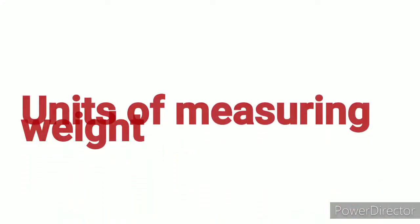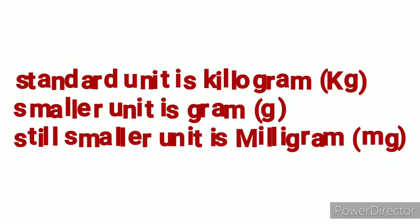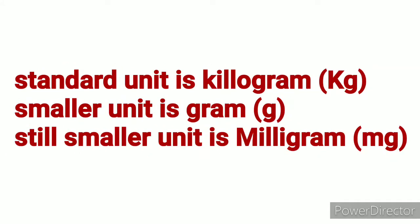Let's understand the units of measuring weight. The standard unit of weight is kilogram and the smallest unit of weight is gram. A still smaller unit of weight is milligram.